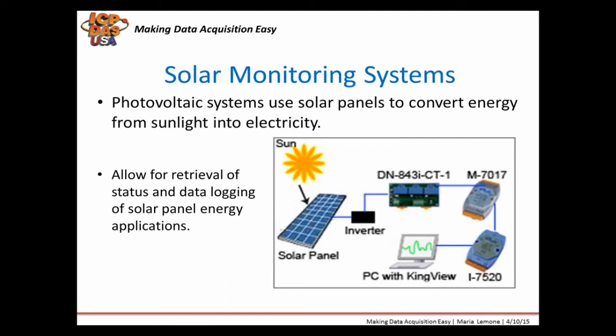Photovoltaic systems use solar panels to convert energy from sunlight into electricity. Solar power monitoring systems consist of solar panels, power inverters, current input sensors with AC-DC inputs, analog input modules, communication converters, and monitoring software. They provide detailed status information like kilowatt hours and temperature, and the information can also be logged so reports can be pulled up as necessary. PV systems can be hardwired, wireless, or internet-based and can provide power monitoring solar station information.